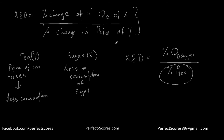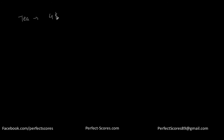Let's go through a numerical example. Let's say the price of tea rises from four dollars to five dollars. Because of that, the demand for sugar falls from 50 units to 40 units.